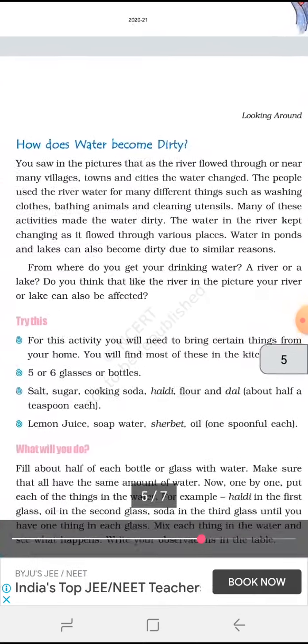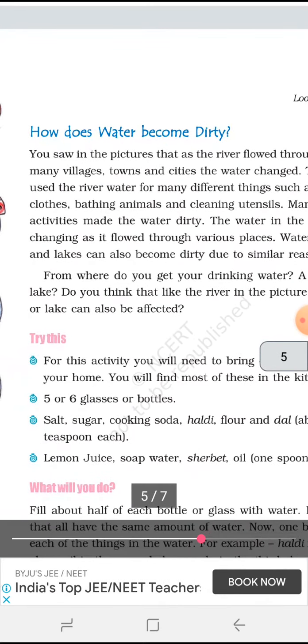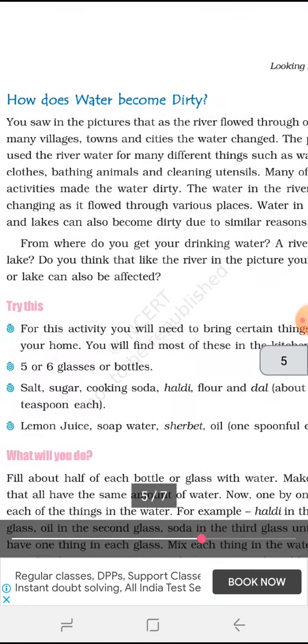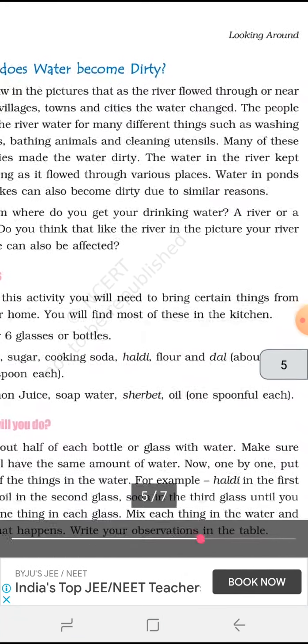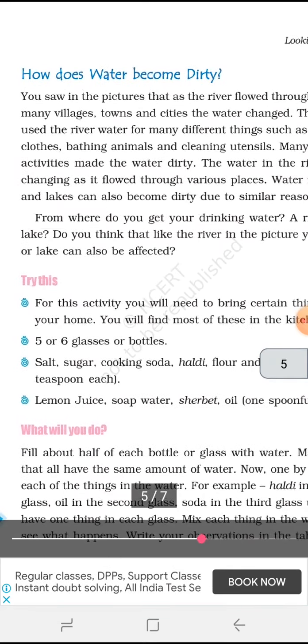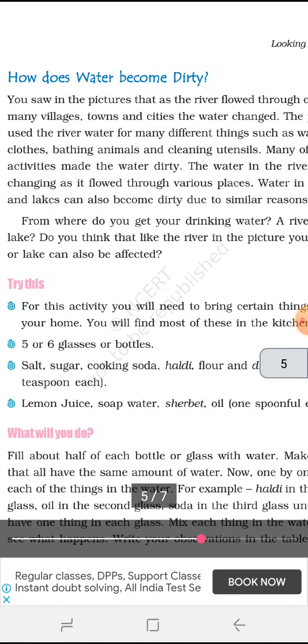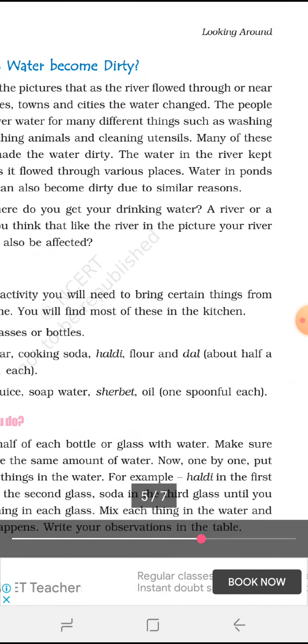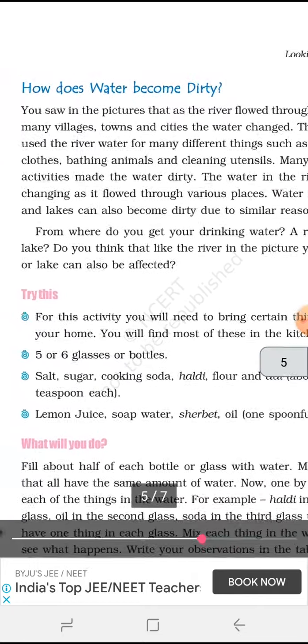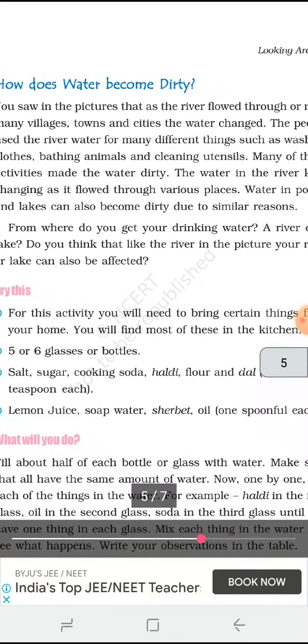How does water become dirty? Here is a very good question, how does water becomes dirty? Yes, we can read this paragraph. You saw in the picture that as the river flowed through or near many villages, towns and city, the water changes. This is the picture that the river water is coming from the mountain area to many towns, to many villages and the last to the cities and as the moment goes by, the water changes its colour. The people use the river water for many different things.